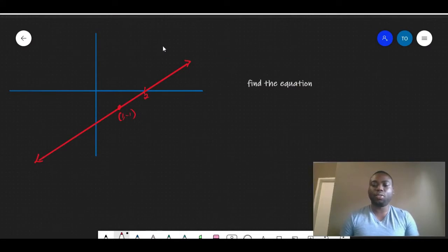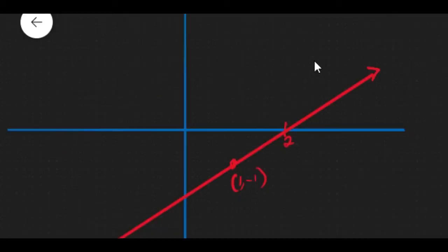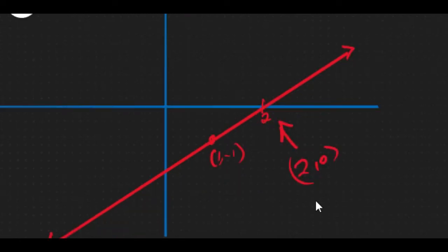Now, the question here is asking us to find the equation. For us to find the equation, we need two points on our graph. And as you can see, we have two points. We have this point over here, which is (2, 0), and that point over there, which is (1, -1).